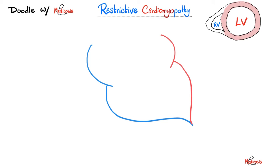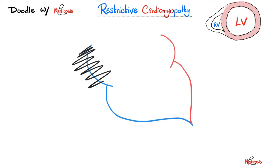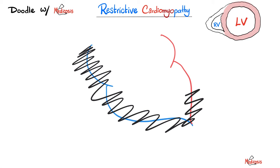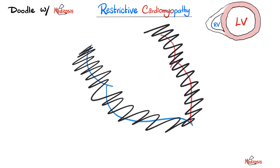Here's my heart — right atrium, right ventricle, left atrium, left ventricle. Restrictive cardiomyopathy: I have fibrosis throughout. Do you think this heart can relax and accept blood? Not when it's fibrotic like this.